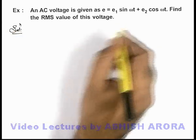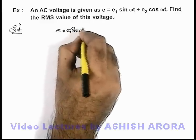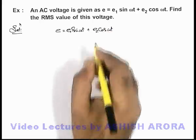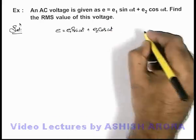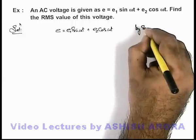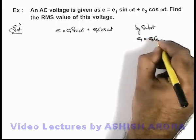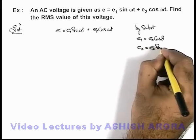Now in this problem, we are given that this AC emf is e₁ sine omega t plus e₂ cosine omega t. Here we can reduce this function in a single trigonometric form by substituting. Here we can write e₁ as e₀ cosine theta and we can substitute e₂ as e₀ sine theta.